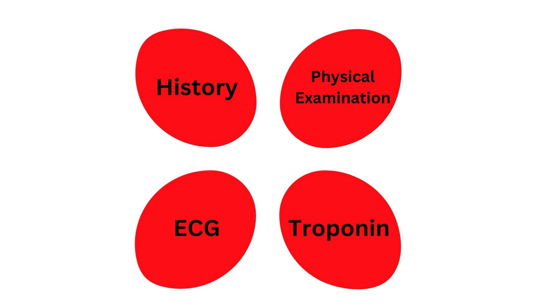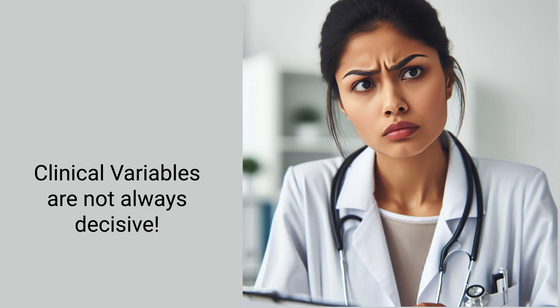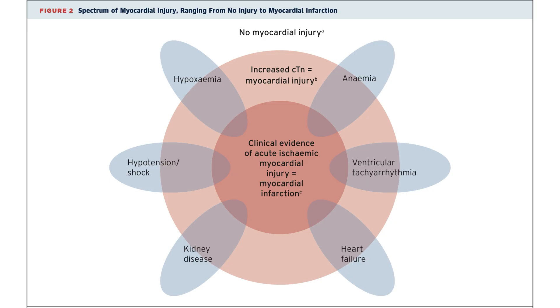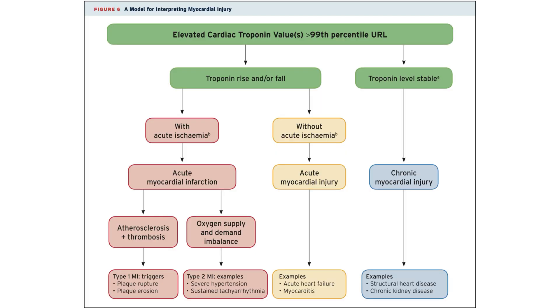We need to rely on multiple clinical variables, not just the troponin result. But in many cases history is vague, there could be a remote cardiac history, we may not have an old ECG for comparison, and the echo window is poor. How will we differentiate type 2 MI from myocardial injury? There can be gray zones between type 2 MI and myocardial injury, and in these situations the differentiation may not make a difference in acute management. Both type 2 MI and myocardial injury are associated with poor prognosis, and we do not have specific treatments other than treating the underlying condition.